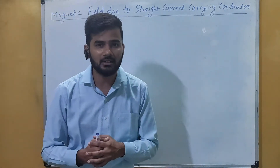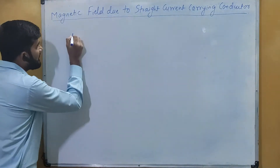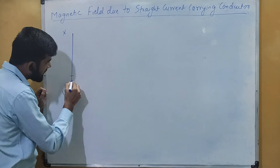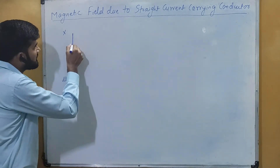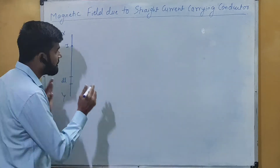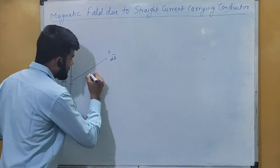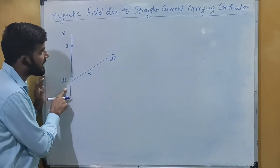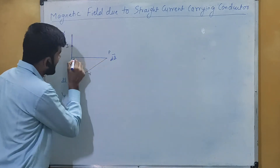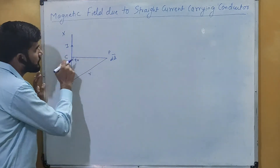We have a straight current carrying conductor and we will calculate the magnetic field at any point. We will consider a straight current carrying conductor XY, and we have to consider a small current carrying element dL with current I. Biot-Savart law is valid for a small current carrying element. We have to find the magnetic field at a point P, that is dB, which is at a distance R from this current carrying element. We will draw a perpendicular from point P which will make a 90-degree angle, and we will name this point C. The distance from P to C is A.